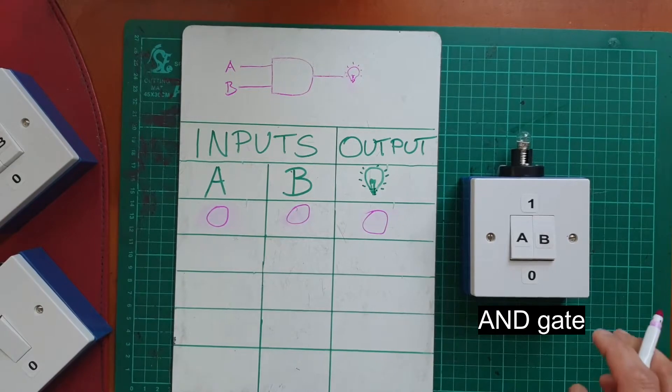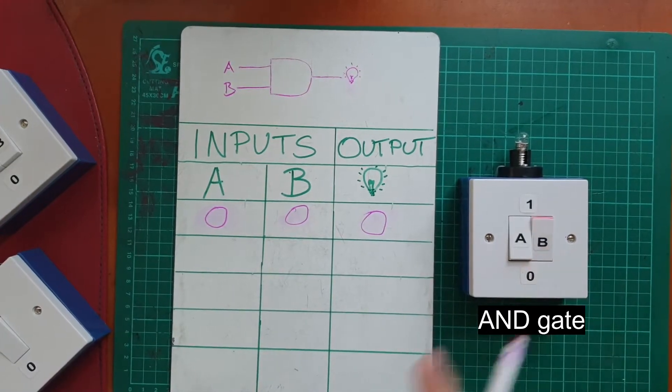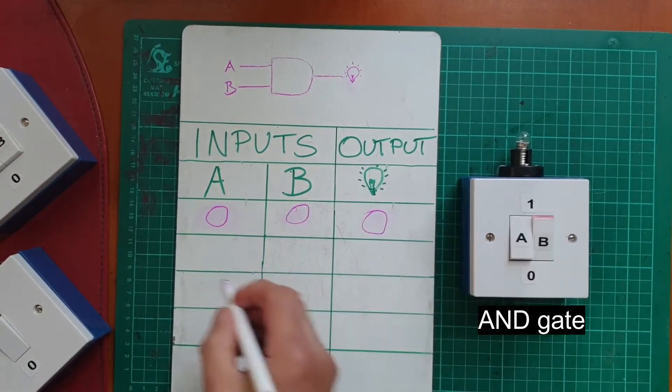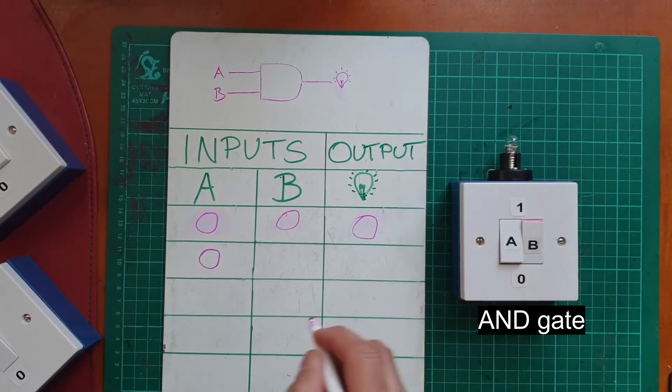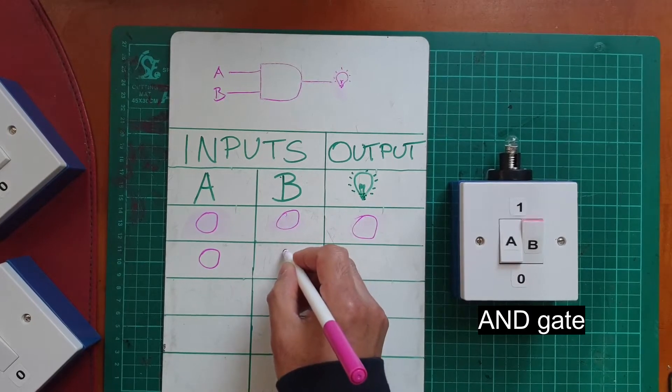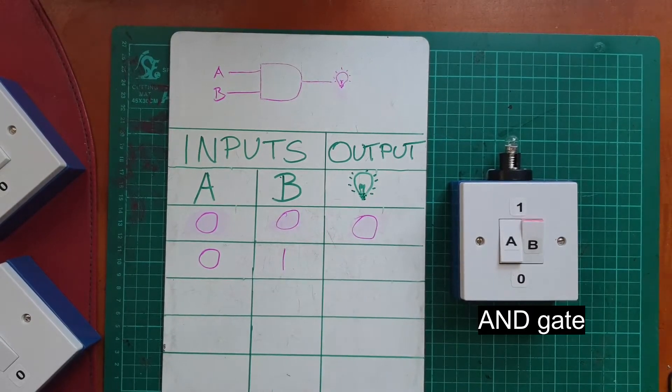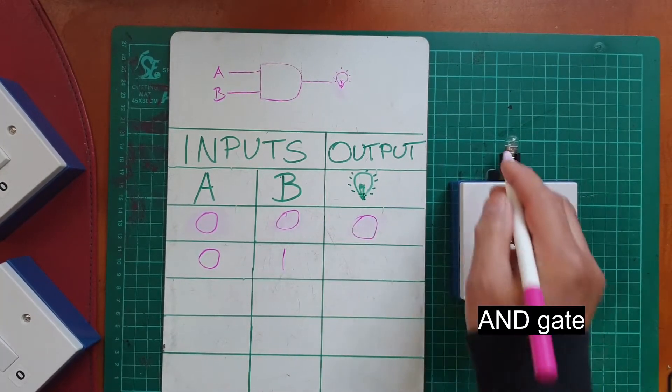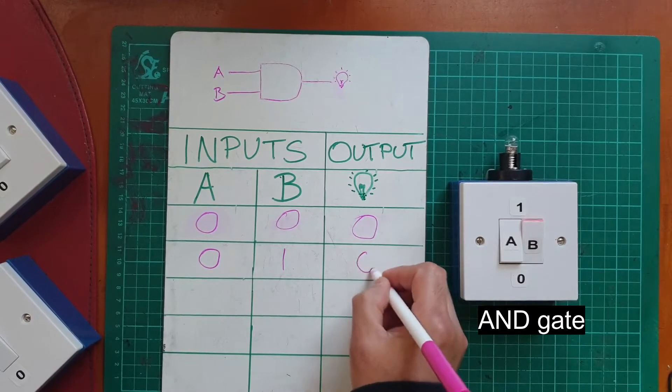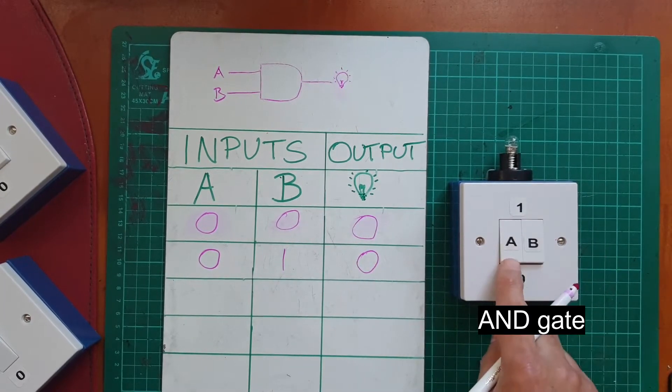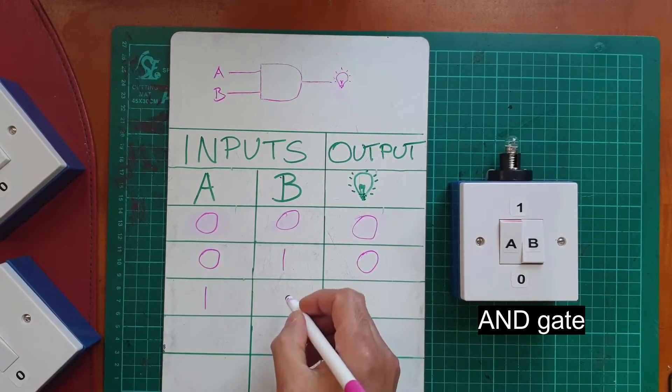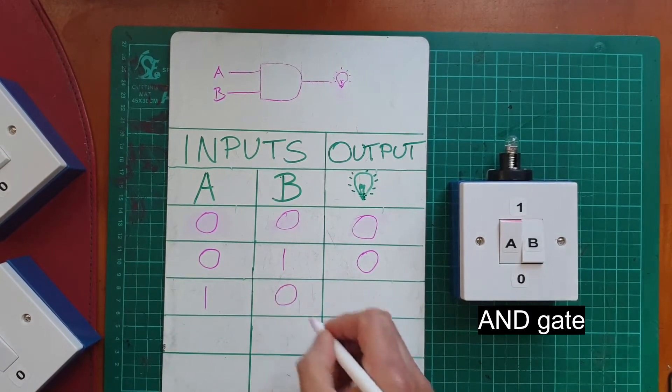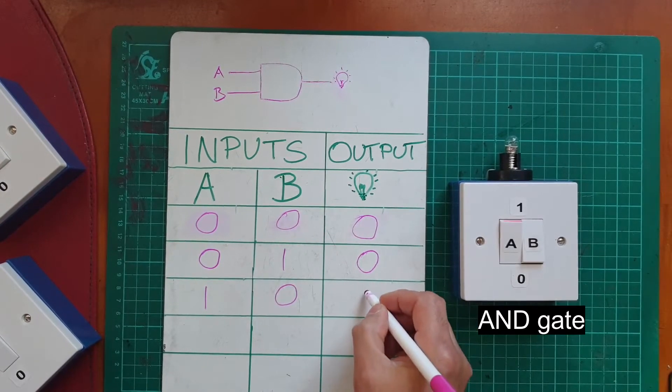So let's try switching on B. So that's A is in the off position, zero, B is in the on position, we can use a one for that, and the output remains off. Okay, let's try switching on A. So A is on, B off, light bulb still remains off.